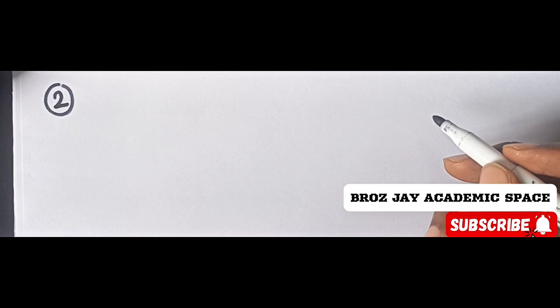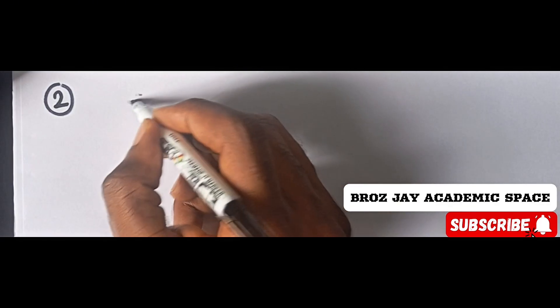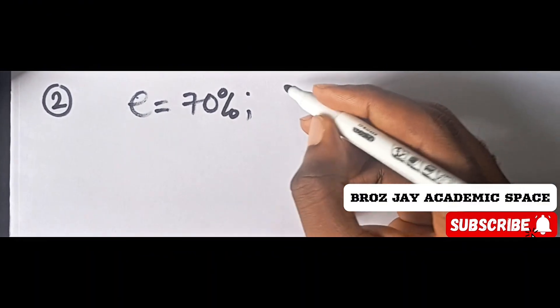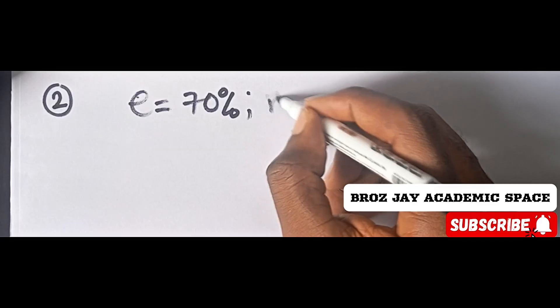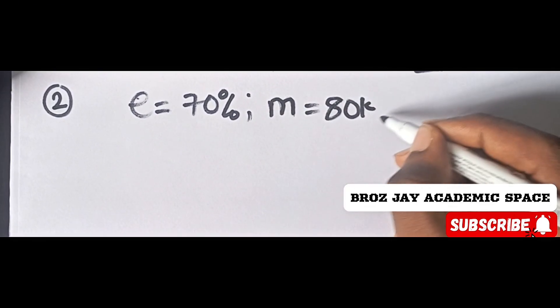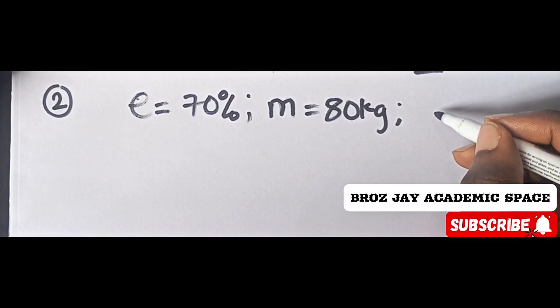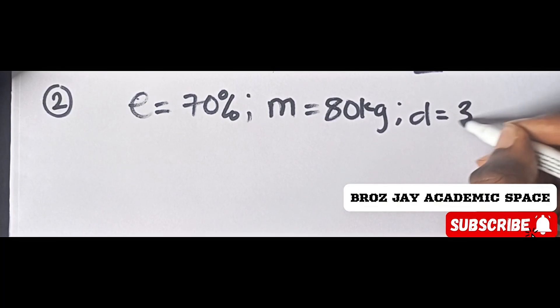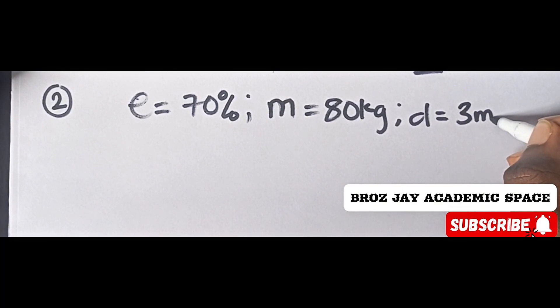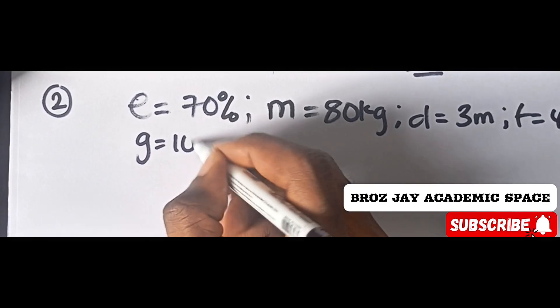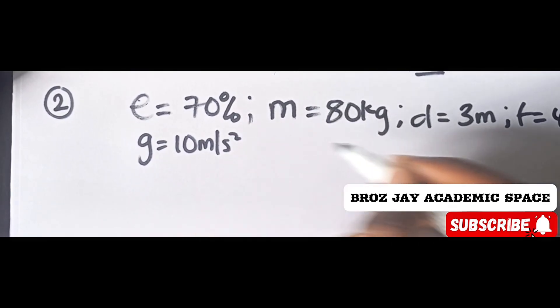The first thing we need to do here is write the parameters: efficiency equals 70%, mass equals 80 kg, vertical distance equals 3 meters, time equals 40 seconds, and g equals 10 meters per second squared.